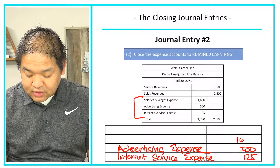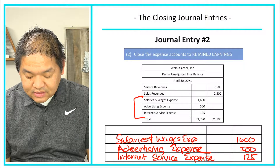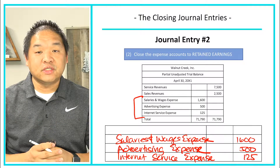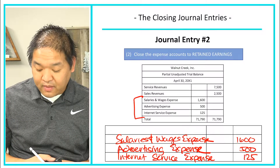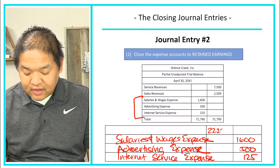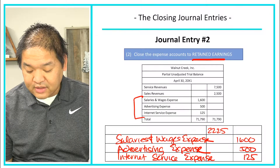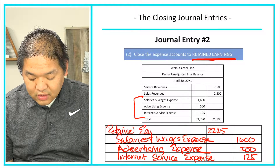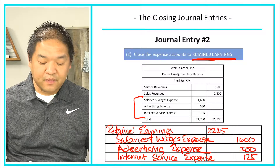Next, salaries and wages expense is a debit, so to close it out we credit it $1,600. Now we've completely closed out all of the expense accounts. We have a total credit balance of $2,225, so to balance the entry we need to debit $2,225. We debit retained earnings for $2,225, and now all of our expense accounts have been closed.